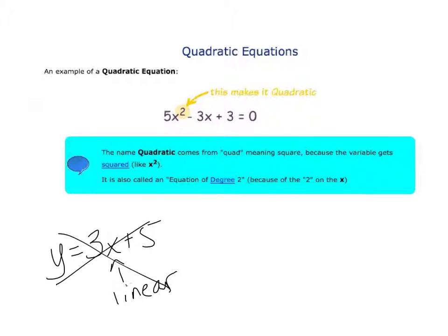We're talking about quadratics. The name quadratic comes from 'quad,' meaning square, because the variable is squared, and we say it's quadratic because it has a degree of 2. Now if you want to turn it into a quadratic function, take that 0 and replace it with the letter y or f(x), and you have a quadratic function.